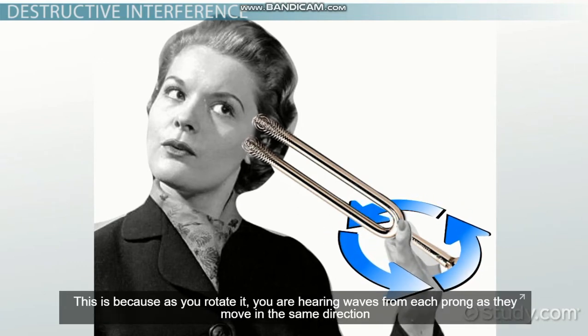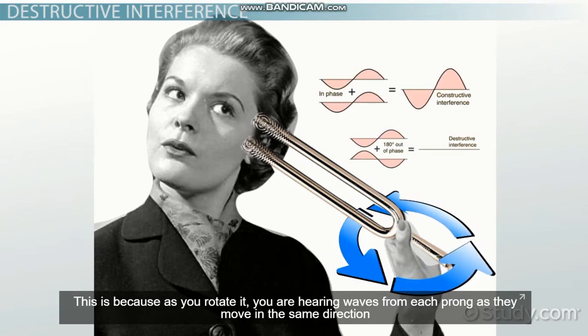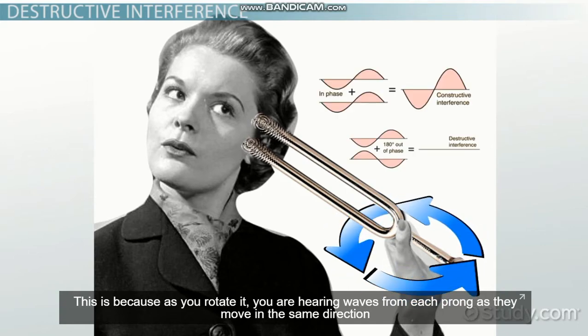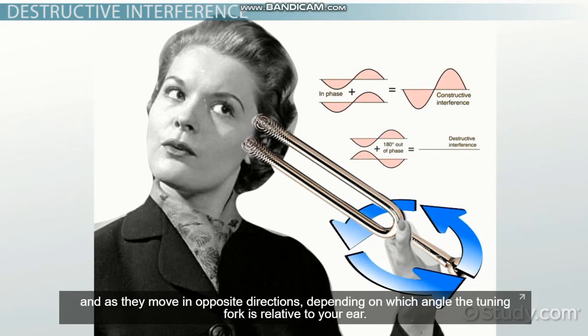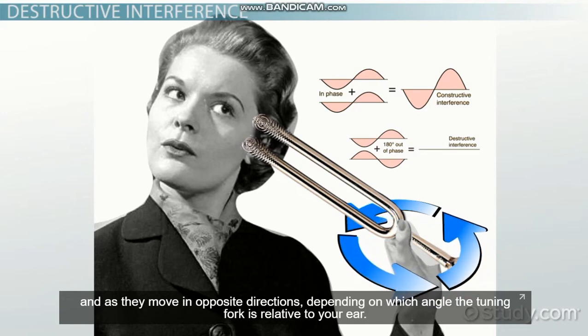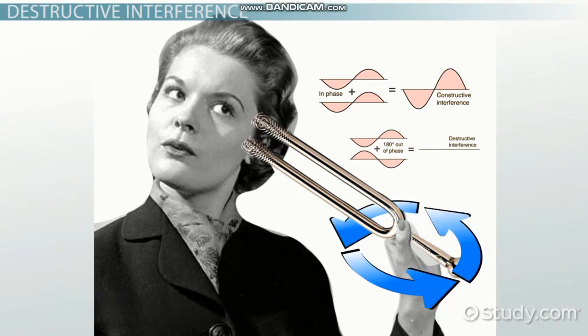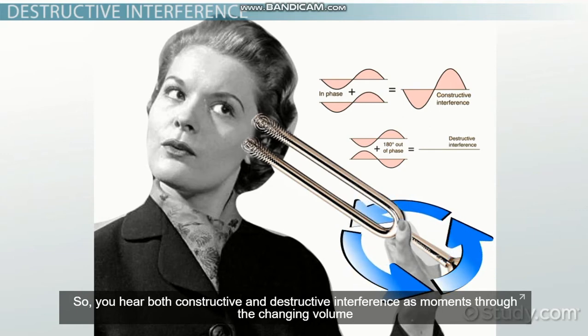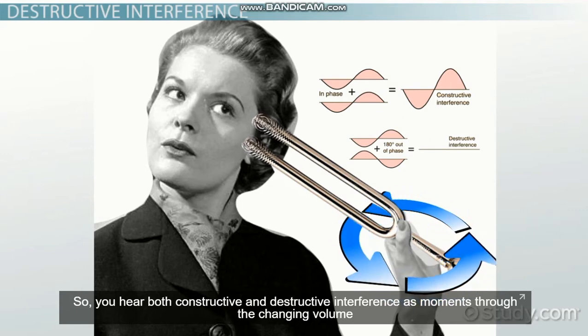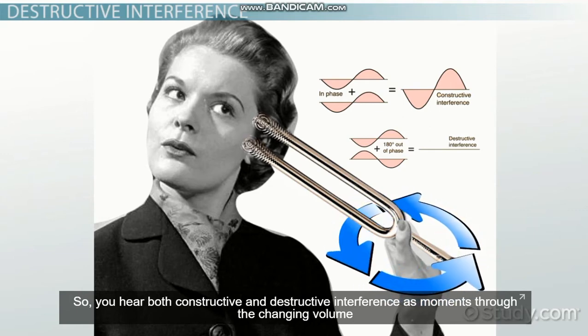This is because as you rotate it, you are hearing waves from each prong as they move in the same direction and as they move in opposite directions, depending on which angle the tuning fork is relative to your ear. So you hear both constructive and destructive interference through the changing volume.